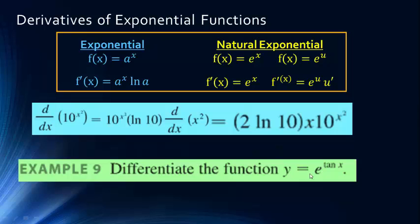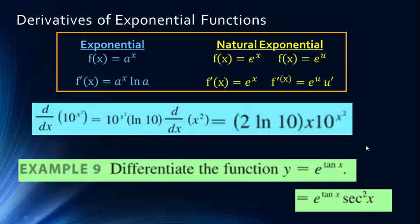One more example: the derivative of e^(tan x). Since the exponent is a function of x, we use the e^u rule — it's simply e^(tan x) times the derivative of tan x, which is secant squared. That's our answer. This gives you some beginning work with derivatives of exponentials and logs — I highly recommend you go back and review the rules around logs and exponentials.